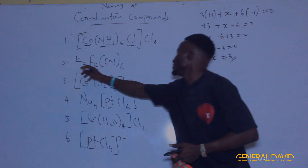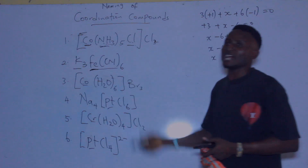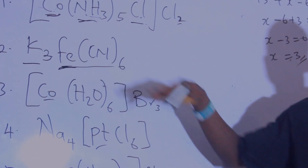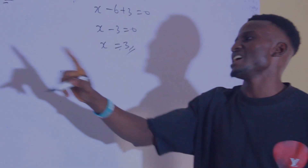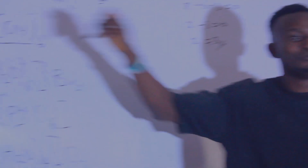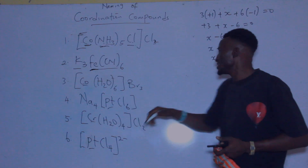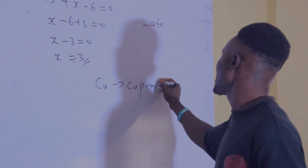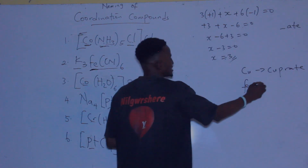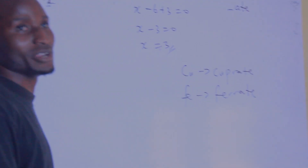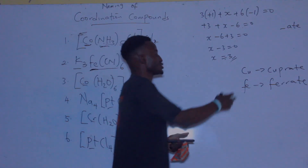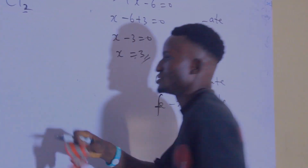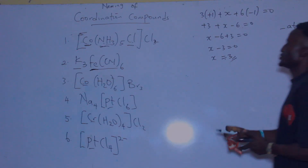Now for the naming: the cation side is potassium and the anion side contains the complex ion. Since the central atom (iron) is found on the anion side, it will end with -ate. For copper it would be cuprate, and for iron it is ferrate — the 'fer' comes from ferrum, the Latin name for iron. So this rule applies to our second compound.